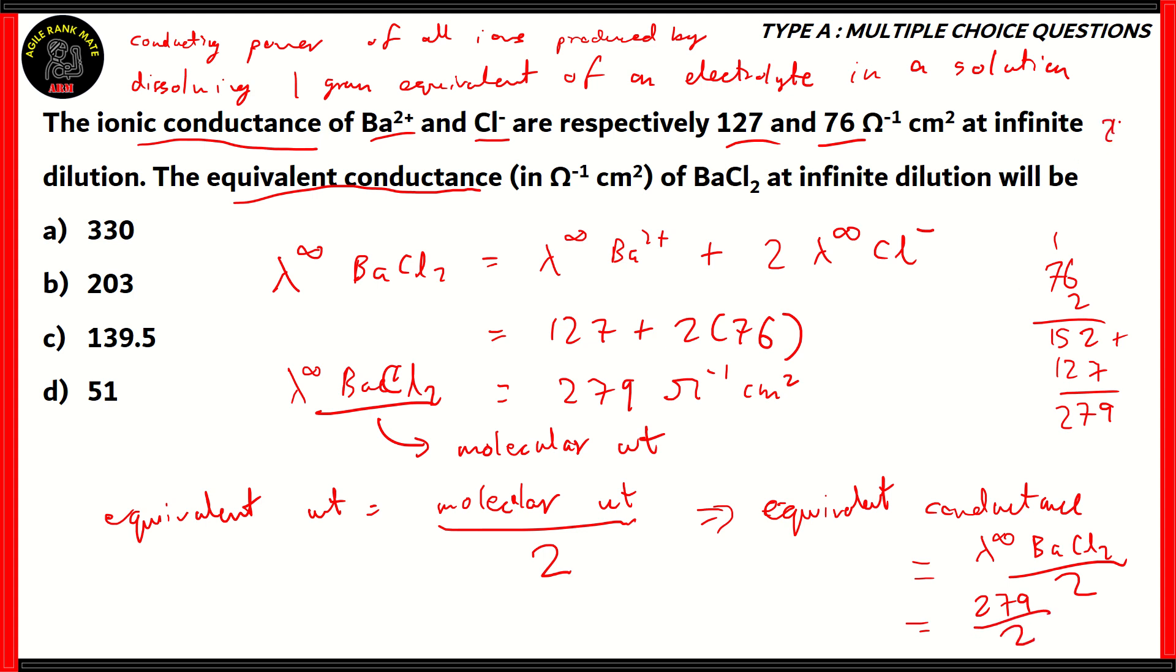Therefore, equivalent conductance would also be equal to lambda infinity of BaCl2 over 2, which means it is 279 over 2. Let's divide that here. 279 divided by 2 gives 139.5. So basically, the equivalent conductance of BaCl2 would be 139.5. So, option C, 139.5 turns out to be the right option.